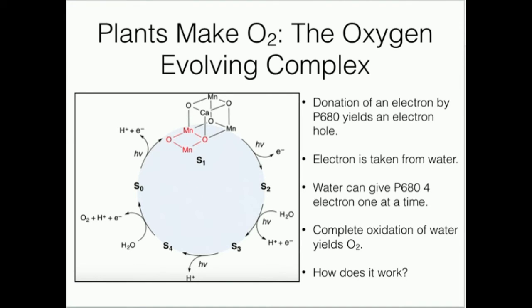And that's very important because remember P680 only transfers one electron at a time. So P680 transfers an electron, the electron hole is filled by this complex by giving off an electron. Then P680 gives off another electron, and the electron hole is filled from another electron that's given off by this enzyme. And then P680 donates another one, and it's one at a time.